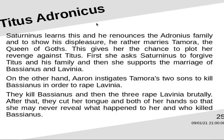Saturninus learns this and renounces the Andronicus family. He instead marries Tamora, the Queen of Goths, giving her the chance to plot her revenge against Titus. Aaron instigates Tamora's two sons to kill Bassianus in order to rape Lavinia. Chiron and Demetrius kill Bassianus and then the three brutally rape Lavinia. After that, they cut her tongue and both of her hands so that she may never reveal what happened to her and who killed Bassianus.